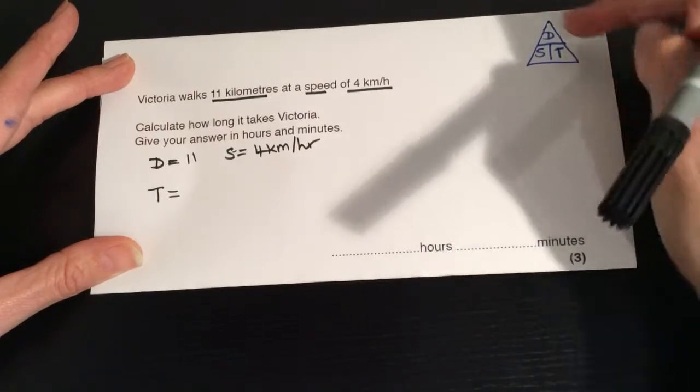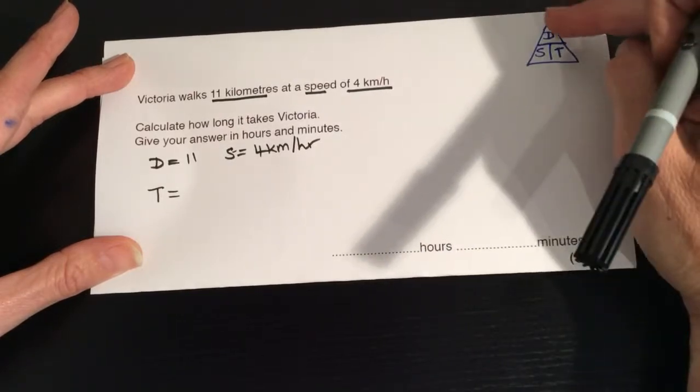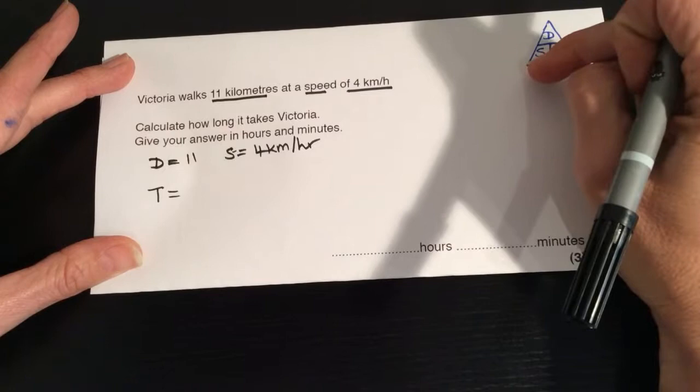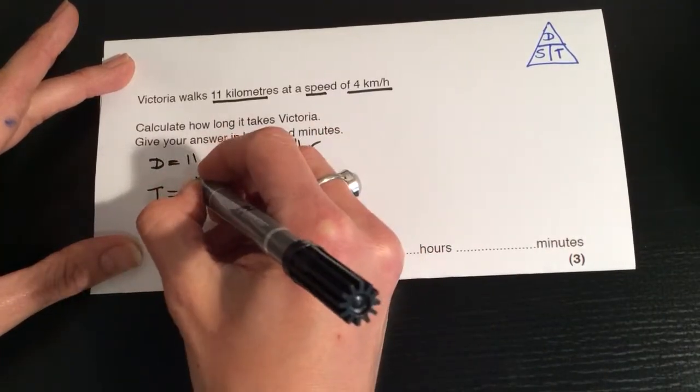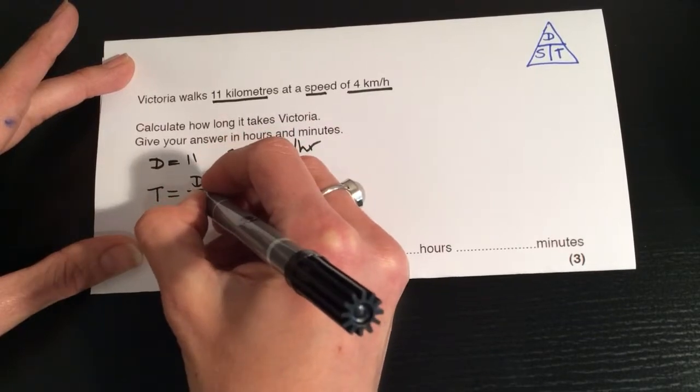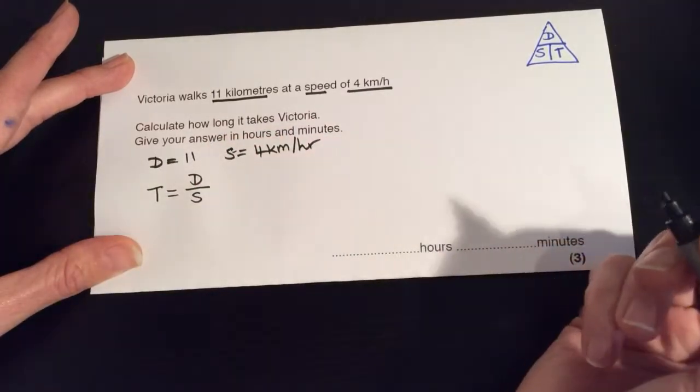then because the time is down here, that means that this line indicates that we're doing distance divided by speed. So the time is the distance divided by the speed.